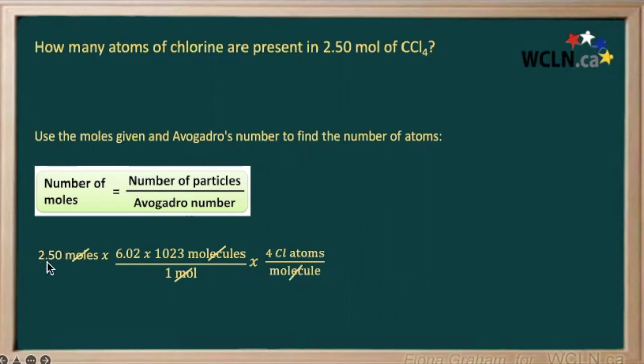So we would multiply 2.50 by Avogadro's number by 4 to give us about 6.02 times 10 to the 24 atoms of chlorine.